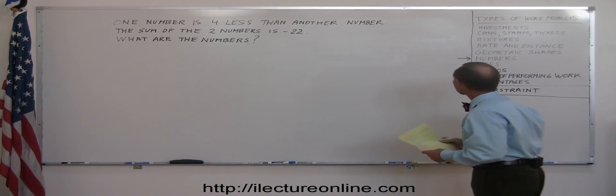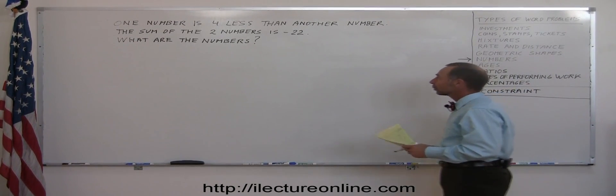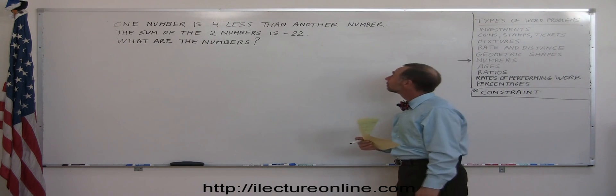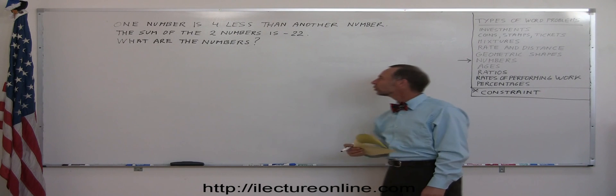Okay, here's another problem in the category of numbers. We're dealing with two numbers. One number is four less than another number. The sum of the two numbers is negative 22.